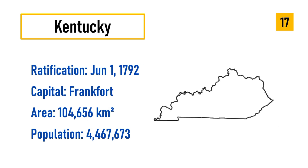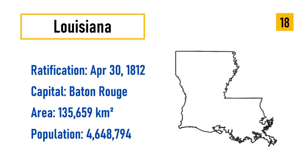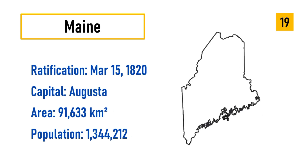Number 17: Kentucky, ratification June 1, 1792, capital Frankfort, area 104,656 square kilometers, population 4,467,673. Number 18: Louisiana, ratification April 30, 1812, capital Baton Rouge, area 135,659 square kilometers, population 4,648,794.